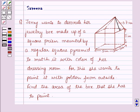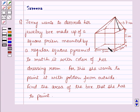Hello and welcome to the session. In this session we will discuss a question which says that Jenny wants to decorate her jewelry box made up of a square prism mounted by a regular square pyramid, to match it with the color of her dressing room. For this she wants to paint it with golden from outside. Find the area of the jewelry box that she has to paint. The width and height of the prism is 5 inches and the slant height of the pyramid mounted over the prism is 7 inches.